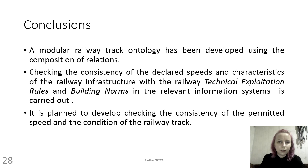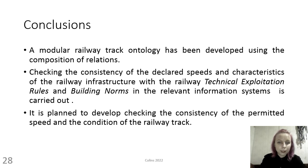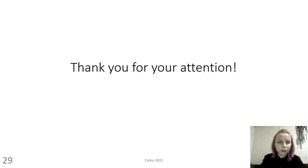A modular railway track ontology has been developed using the composition of relations, checking the consistency of declared speeds and characteristics of railway infrastructure with the railway rules for technical operation and building regulations in the relevant information system. It is planned to further develop checking of the consistency of the permitted speed and the condition of the railway track. Thank you for your attention.